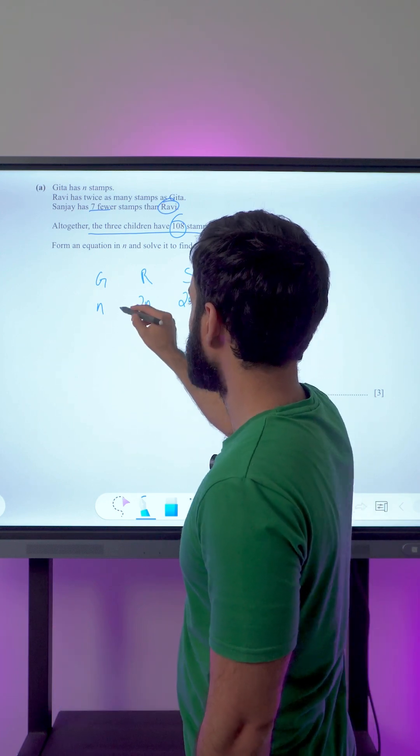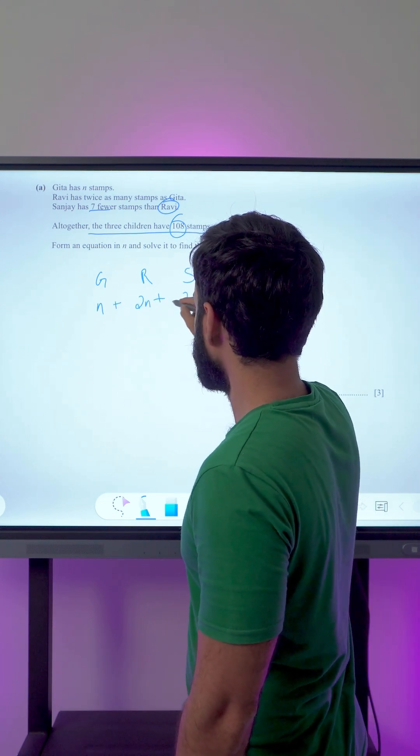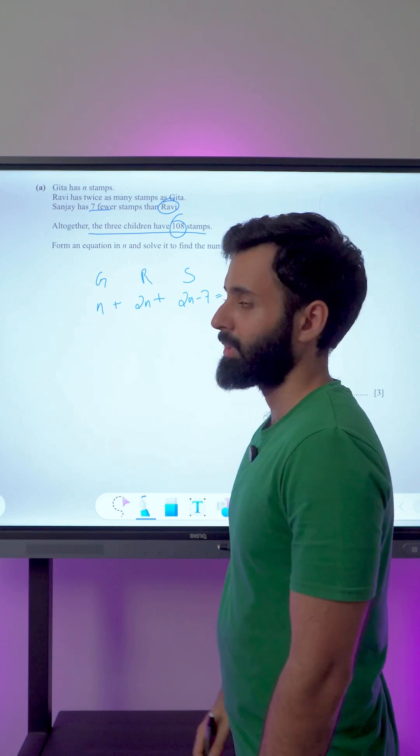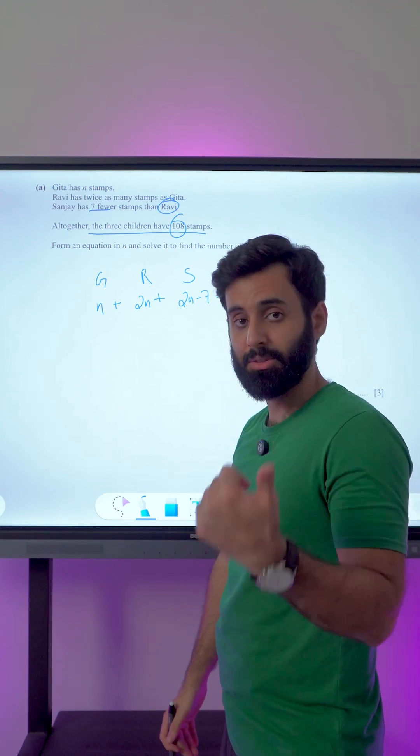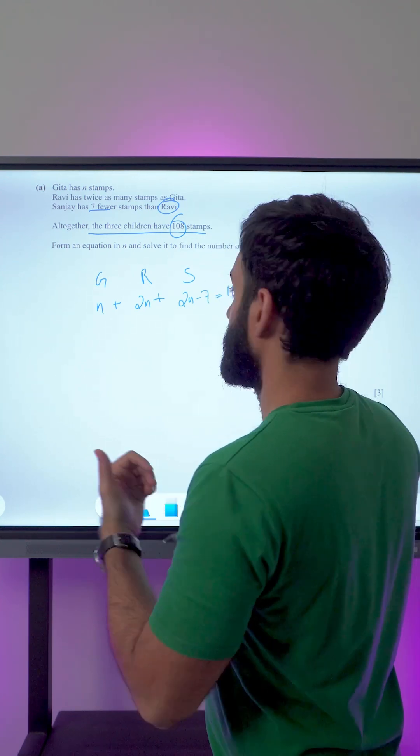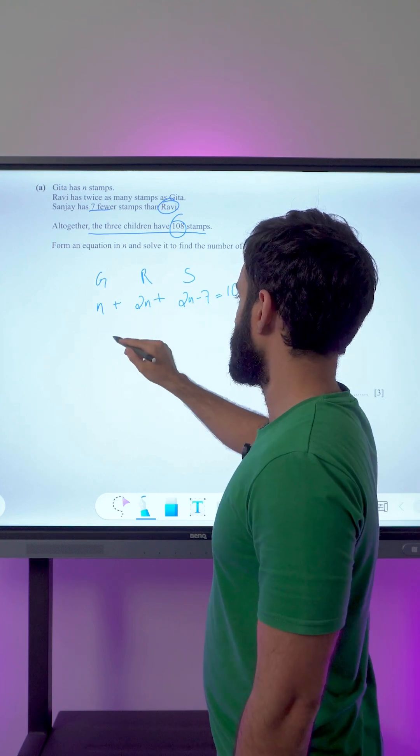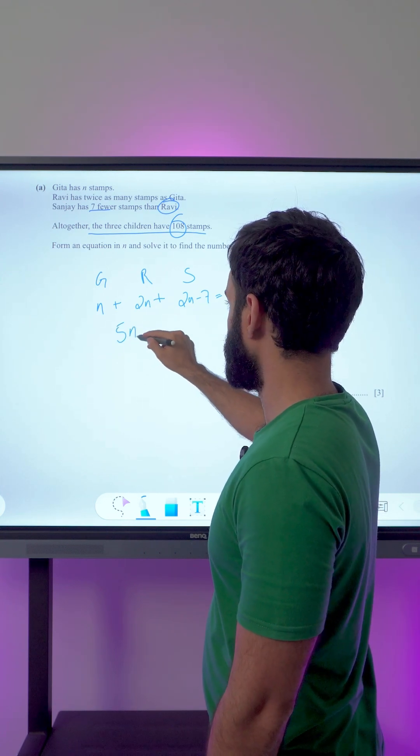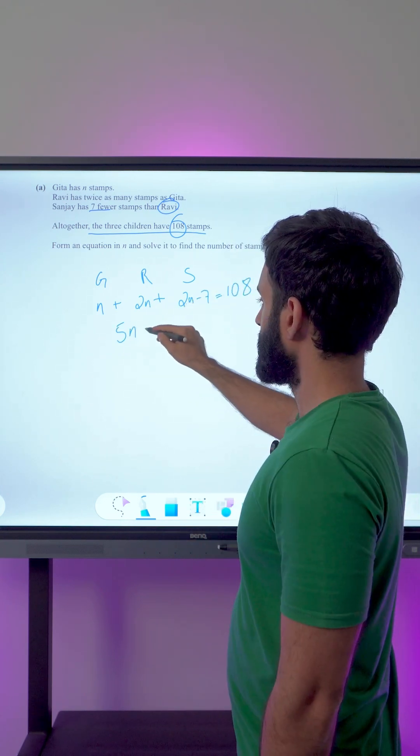That means now I can very easily form an equation: add the 3, set it equal to 108, and then I can use this equation to find out the value of n. Let's find out: 2n plus 2n is 4n, 4n plus n is 5n. Take 7 across the equals sign, or add 7 to both sides, so 108 plus 7 is 115.